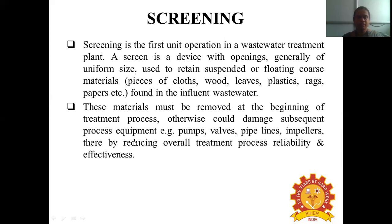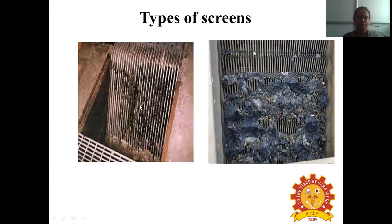If not removed, these materials would damage subsequent process equipment like pumps, valves, pipelines, and impellers, thereby reducing the overall treatment process reliability and effectiveness. There are two different types of screens — one inclined at an angle depending upon the quantity of wastewater and the constituents of floating matter, and some materials are already screened and removed from the wastewater in this type.